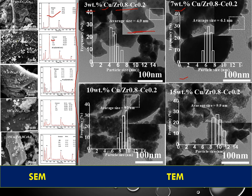From TEM analysis, the average particle size of copper is 4.9 nanometers at 3 weight percent doping. When it is 7 weight percent doped, the average size increases to 6.1 nanometers, and further increases to 9.2 and 9.9 nanometers at 15 weight percent. When this material is subjected to catalytic reactions, by correlating the particle size with results, one can conclude which particle sizes make the metal active or inactive. So knowing the features of materials — like size and morphology — are very important things that SEM and TEM provide.